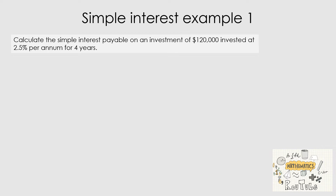Let's look at our first simple interest example: calculate the simple interest payable on an investment of $120,000 invested at 2.5% per annum for four years. Per annum means per year. Using the formula I = PRT ÷ 100, our principal P is $120,000, our rate R is 2.5, and our time T is 4. Note you enter 2.5, not 2.5%, because the formula already accounts for the percentage.